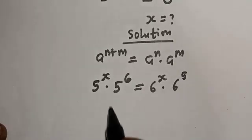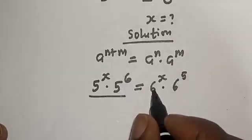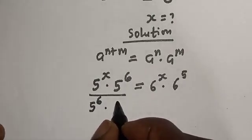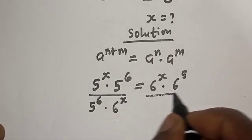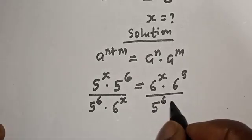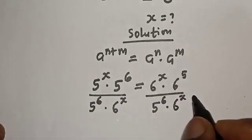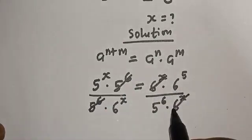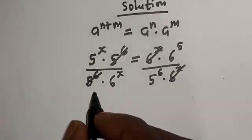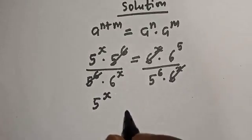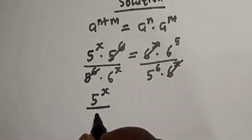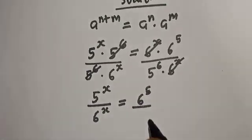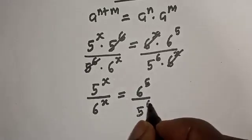As you can see, let's divide both sides by 5 raised to power 6 and 6 raised to power s. This one will cancel this, and here this one will cancel this. We have 5 raised to power s over 6 raised to power s is equal to 6 raised to power 5 over 5 raised to power 6.